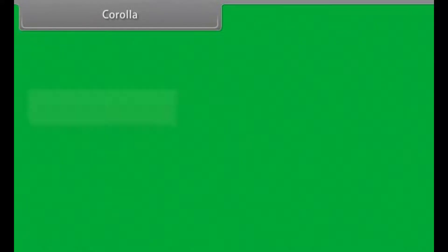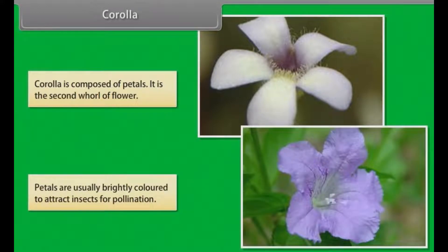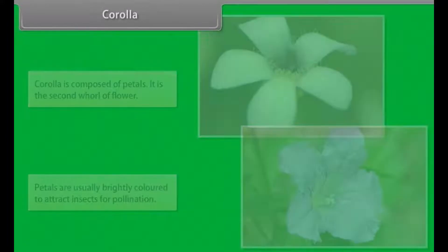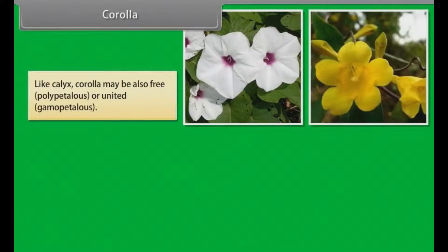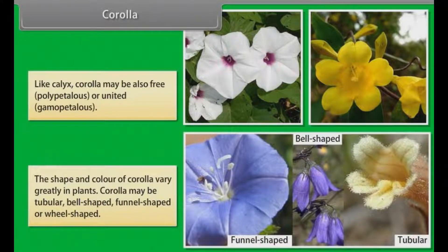Corolla is composed of petals. It is the second whorl of the flower. Petals are usually brightly colored to attract insects for pollination. Like calyx, corolla may also be free — polypetalous — or united — gamapetalous. The shape and color of corolla vary greatly in plants. Corolla may be tubular, bell-shaped, funnel-shaped or wheel-shaped.